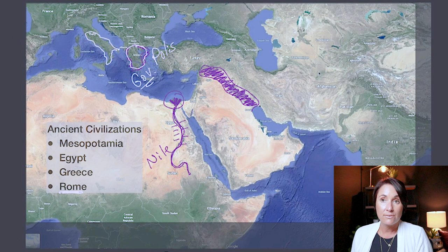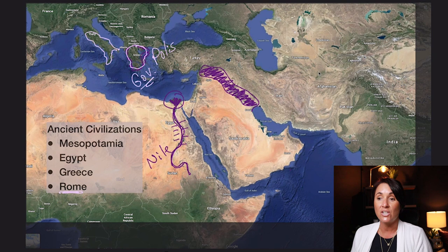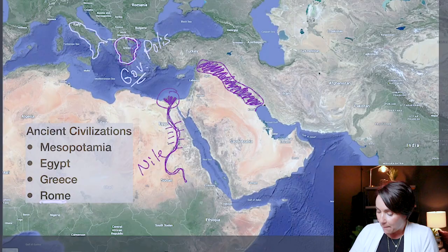This is where all of our ancient civilizations took place. When we're thinking about where this is in the world — because a lot of people don't understand this part of the world — this is all happening in the Middle East and in Southern and Central Europe. And one more thing before I forget: Mesopotamia is where we get writing from as well.